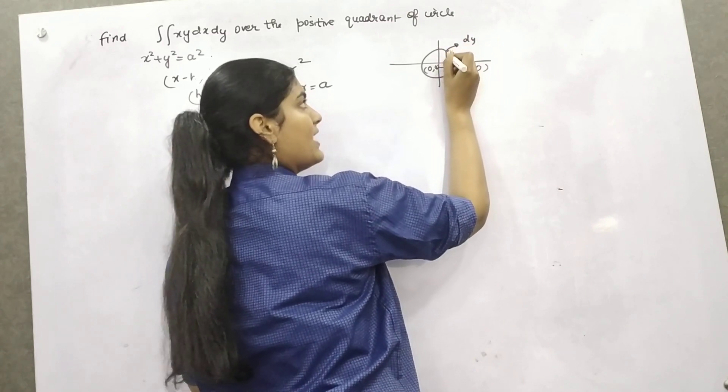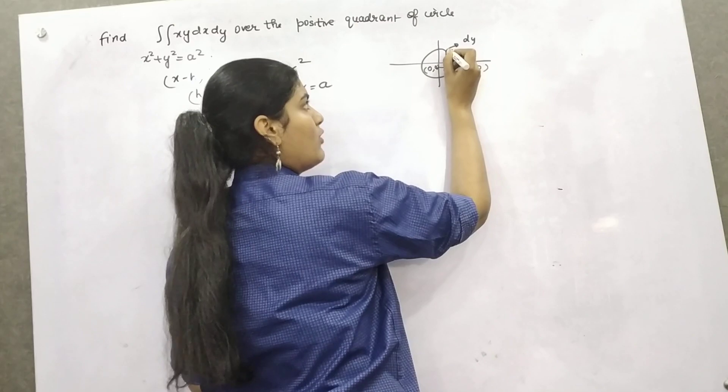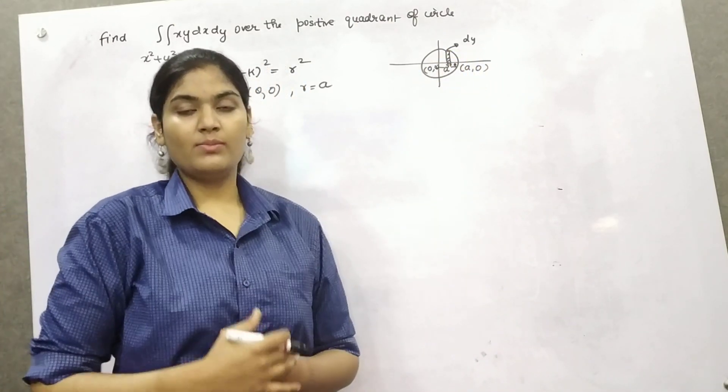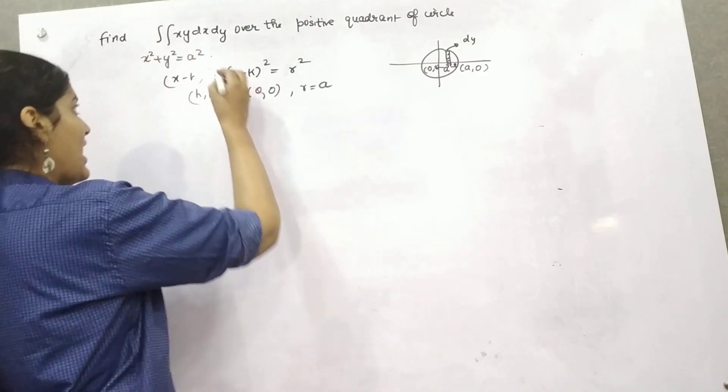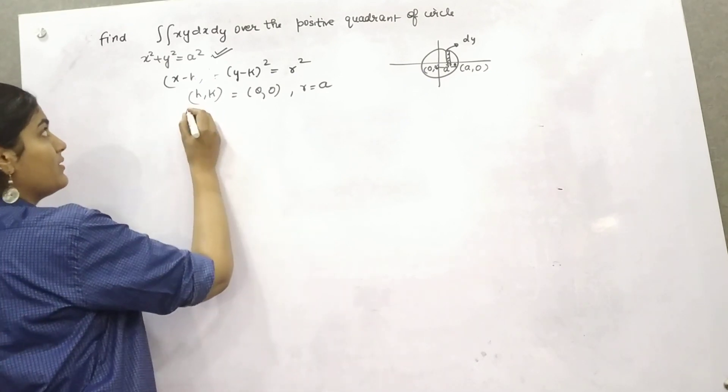So if you find out the value of dy, this is the change in y. So little y, here y is 0, but what is the change here? So whenever it is given, means limits are not given, but the integral is given and equation is given, you can find out the limit from that equation.